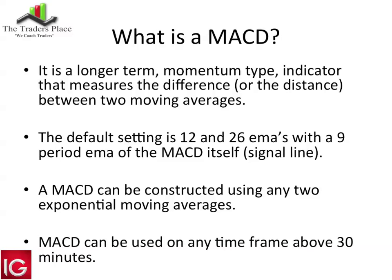The MACD is a longer-term momentum-type indicator that measures the difference between two moving averages. It's telling us by design whether the two moving averages are moving apart, moving closer together, or whether they've crossed over. The default setting is a 12 and 26 EMA with a nine-period exponential moving average of the MACD itself, known as the signal line.